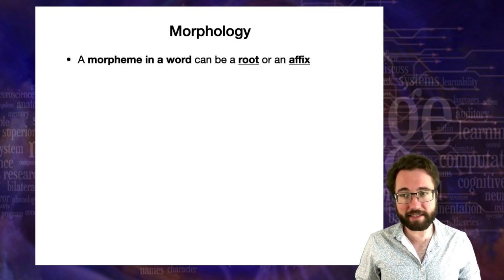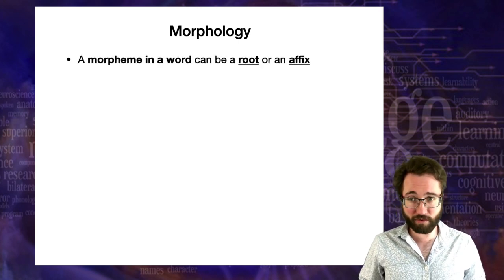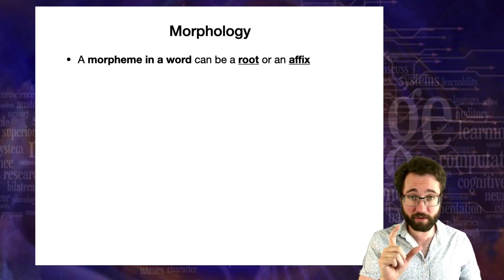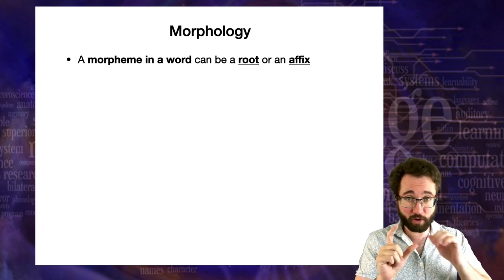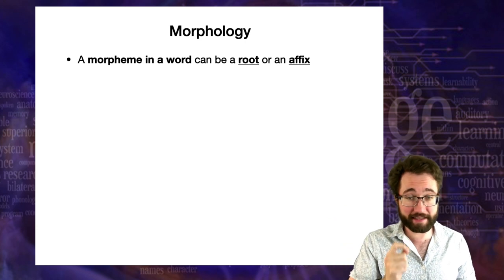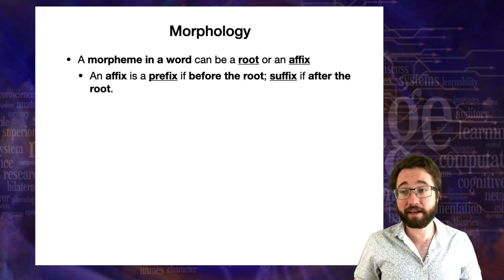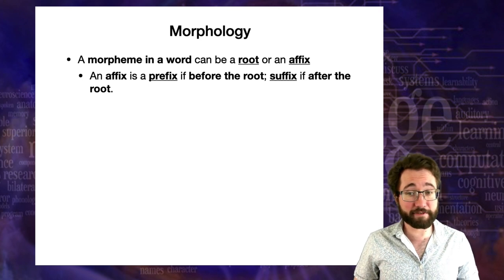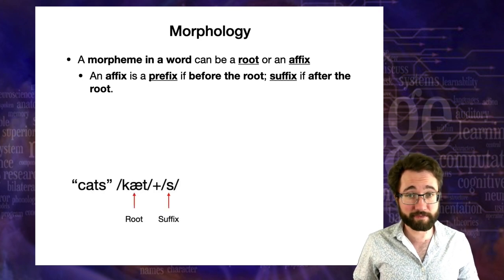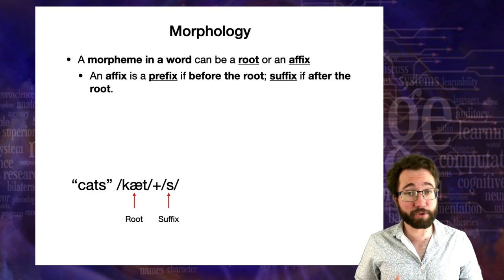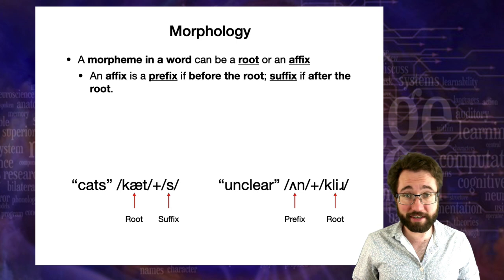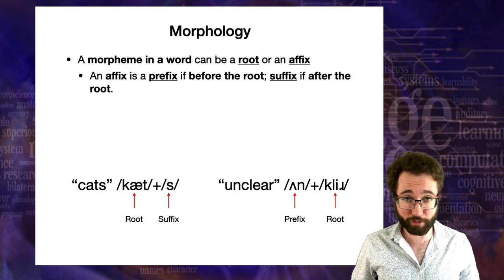A morpheme, as it exists in a word, can be either a root or an affix. A root is the word to which a morpheme is added, and an affix is the thing that is added. An affix is a prefix if it comes before the root, and a suffix if it comes after. So in 'cats', the plural 's' is a suffix, and in 'unclear', the negating element 'un' is a prefix morpheme.